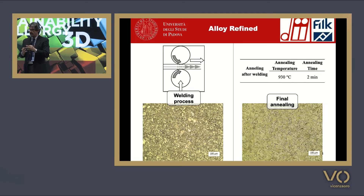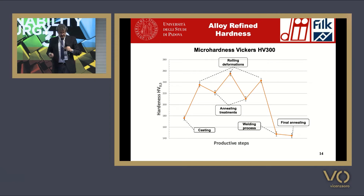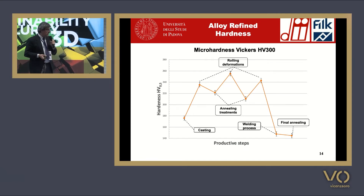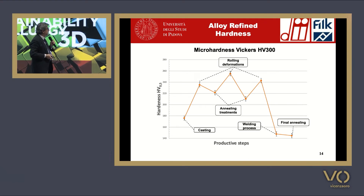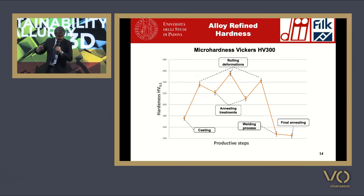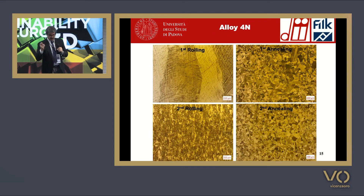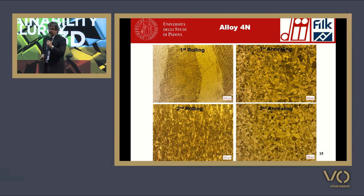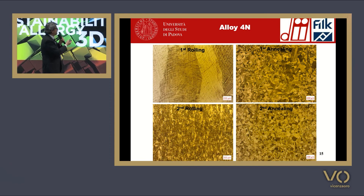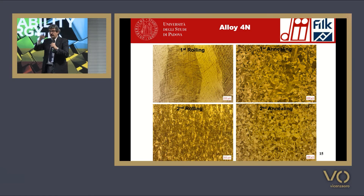How is it possible to reduce this grain growth? It is possible to reduce the movement of grain boundaries. There are two possibilities: either you have a second-phase of particles that acts as a block for grain boundary movement, or it is possible to reduce the grain growth by reducing diffusion, because these processes are governed by diffusion of atoms between adjacent grain boundaries.